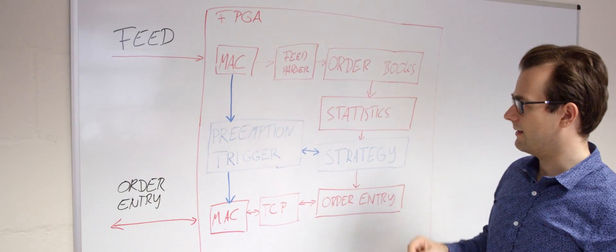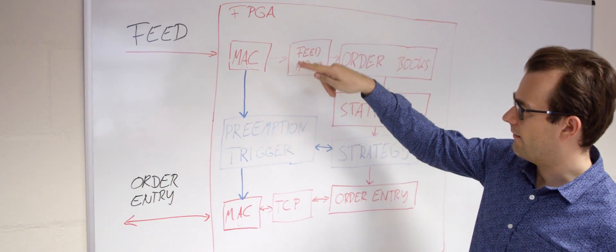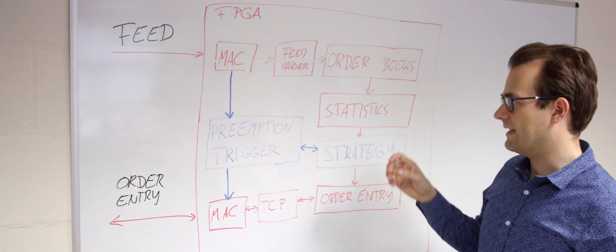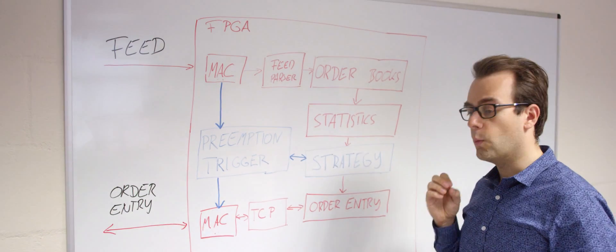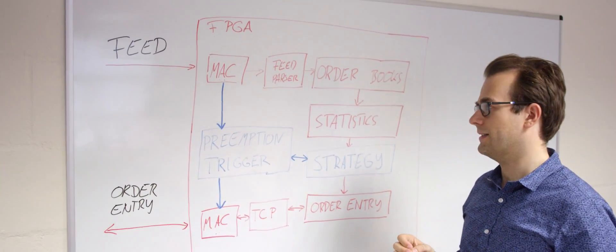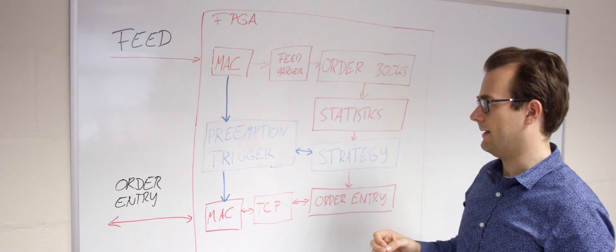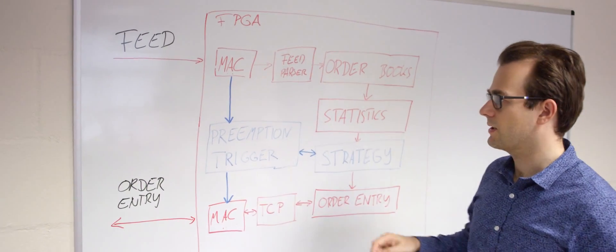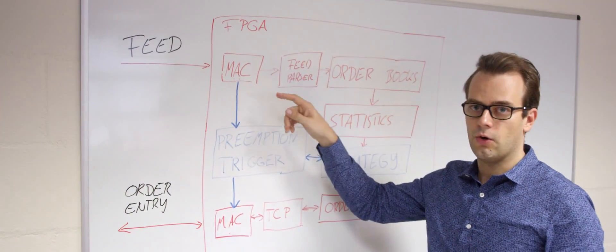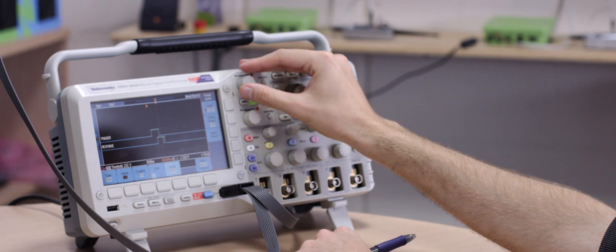Now the interesting thing about this strategy is that you have one fast path, something that you want to execute very fast in certain events, that is when your order is executed. You want to react to that very quickly and that lends itself to the use of a preemption trigger which can actually trigger already when it sees a packet coming in.